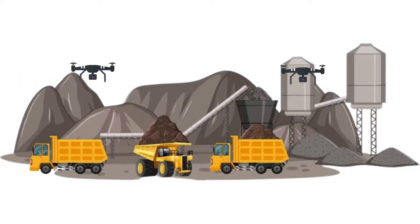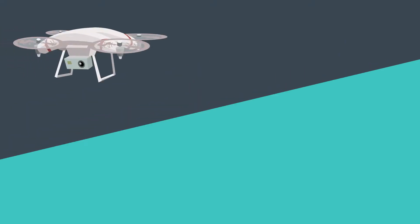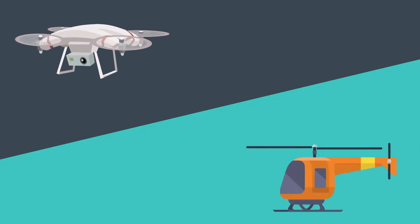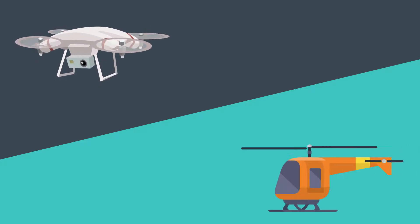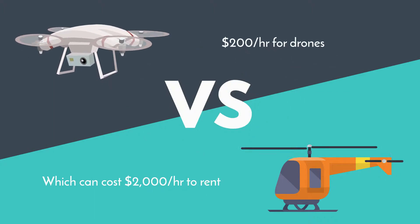Not only do drones have seemingly endless uses at mining sites, but they are also accurate up to 25 millimeters for surveying. In addition, they are a lot cheaper to operate compared to renting out helicopters, which can cost $2,000 per hour to rent versus $200 per hour for drones.